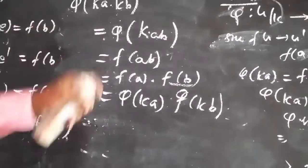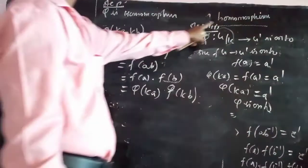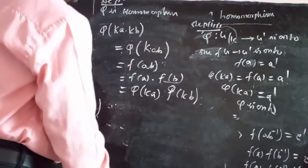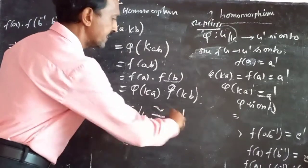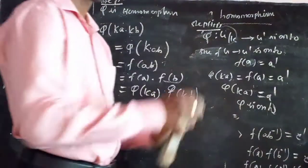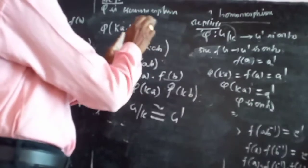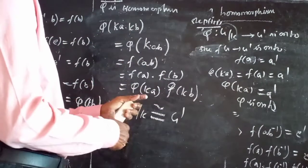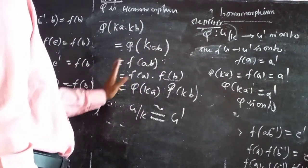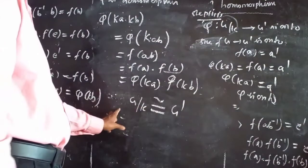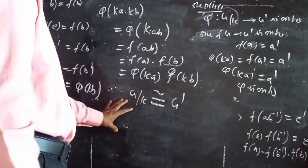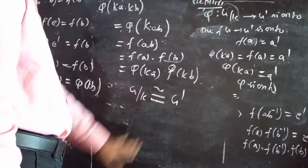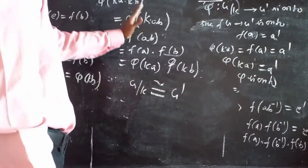Step 1: φ is well-defined. Step 2: φ is one-to-one. Step 3: φ is onto. Step 4: φ is a homomorphism. So φ is an isomorphism. The conclusion of the theorem: G/K is isomorphic to G'. If F: G → G' is an epimorphism and K is the kernel of F, then G/K ≅ G'.